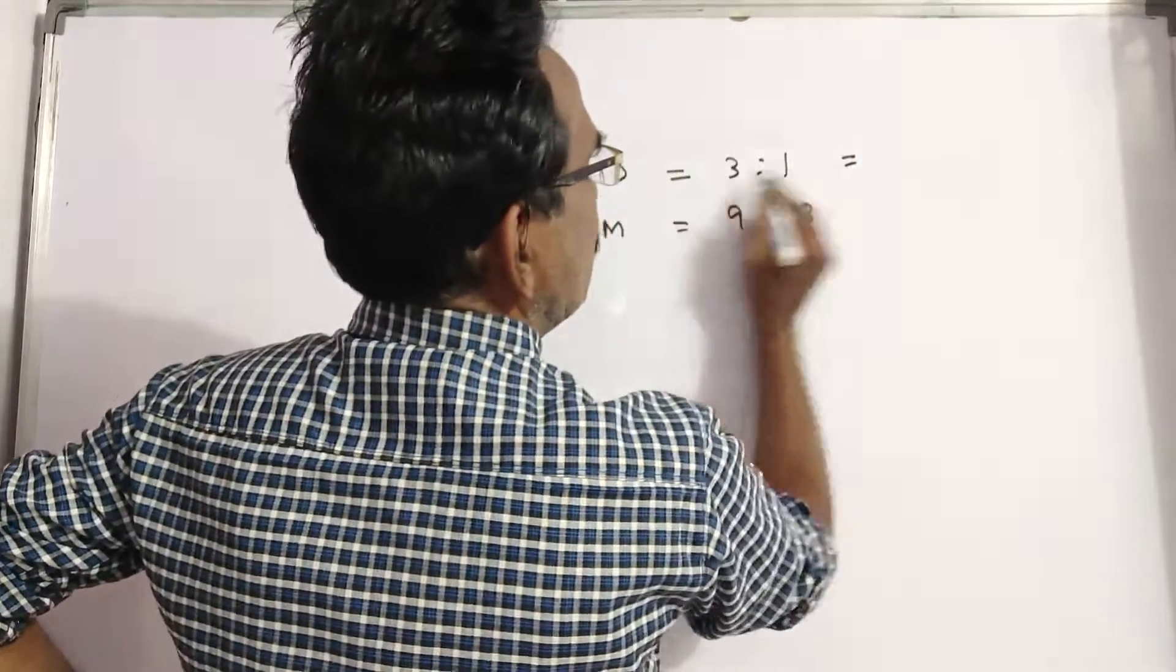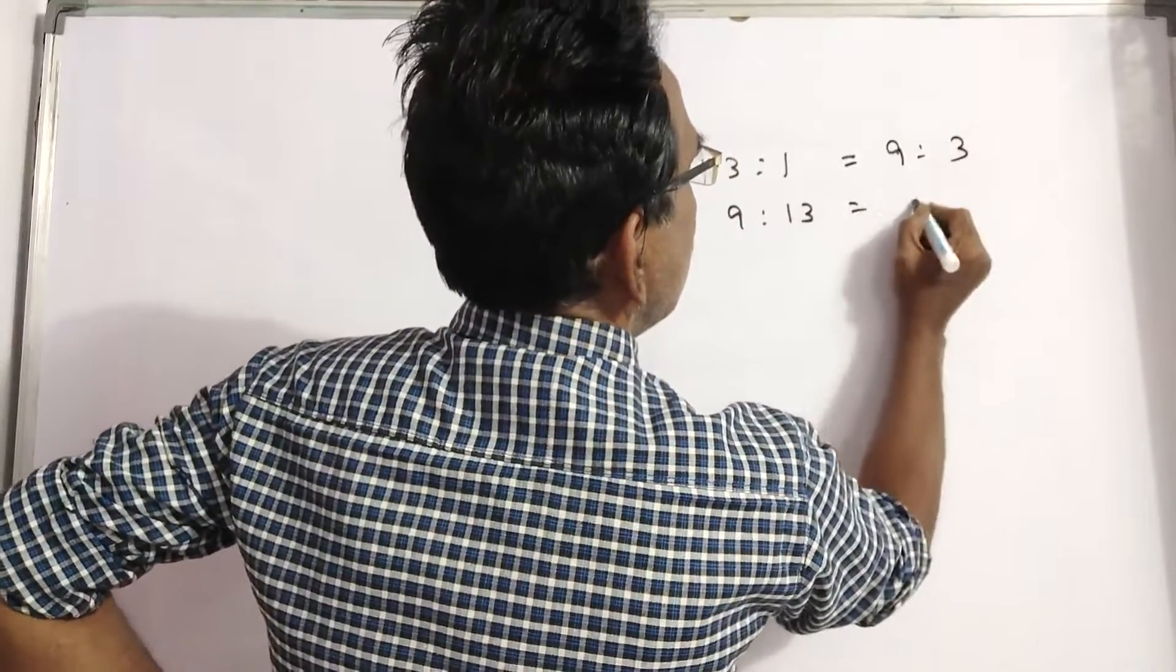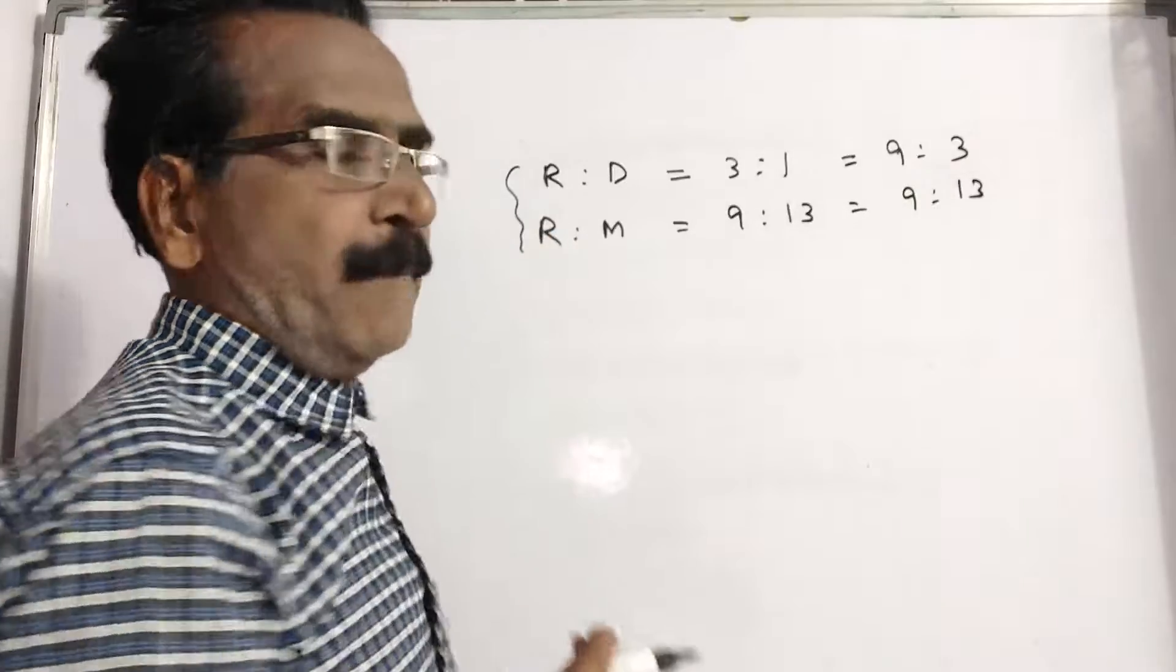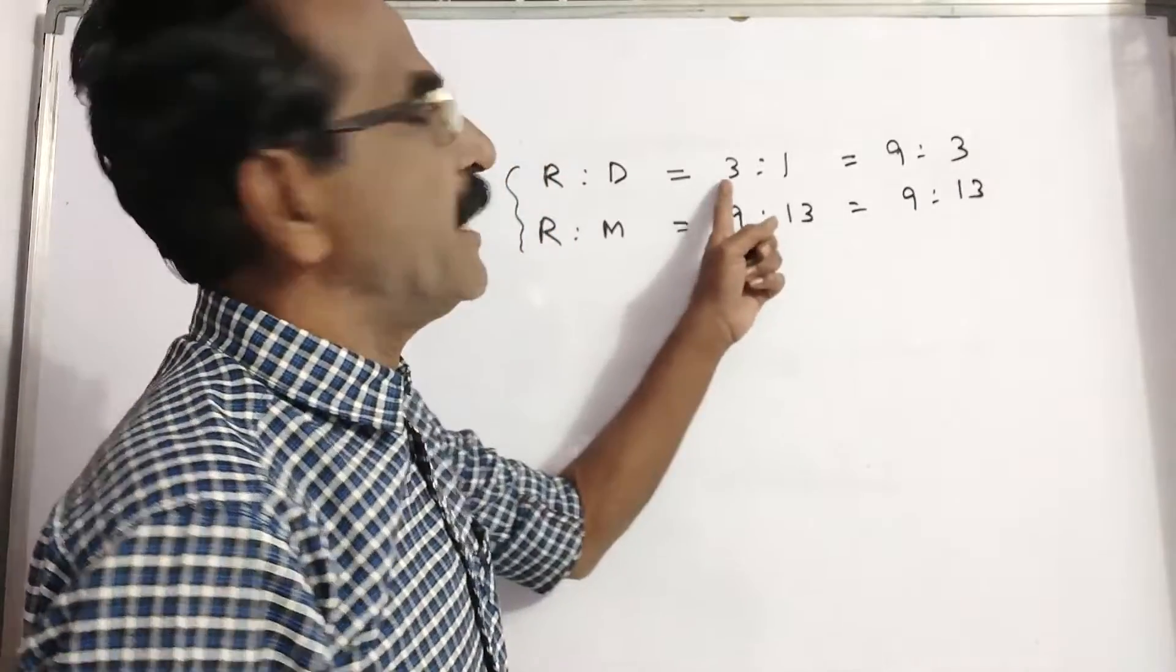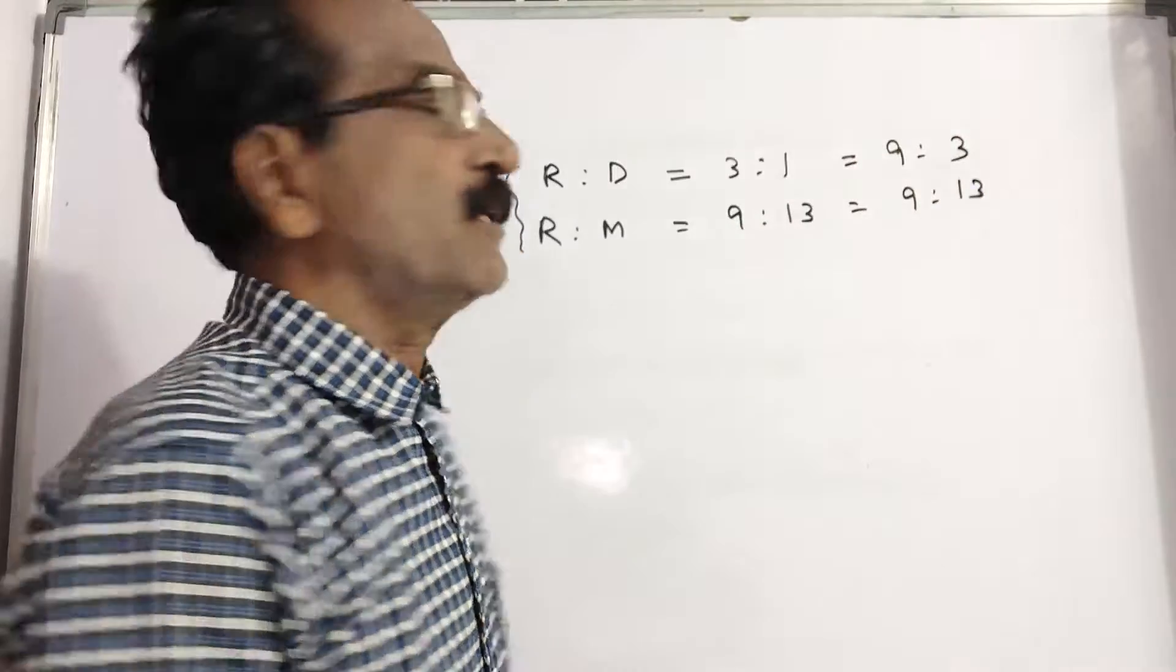Three is to one means three times three is nine, three times one is three. Let us equate Raman by multiplying the first ratio with three. Three times three is nine, three times one is three. Second ratio, nine is to thirteen.